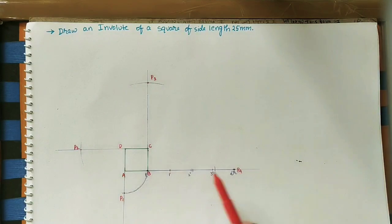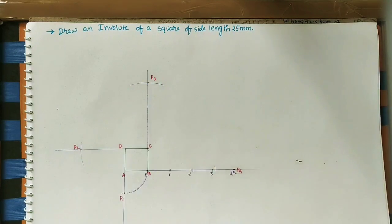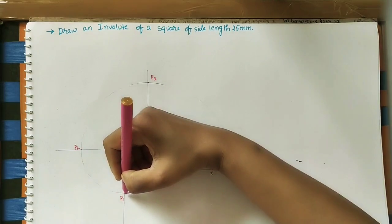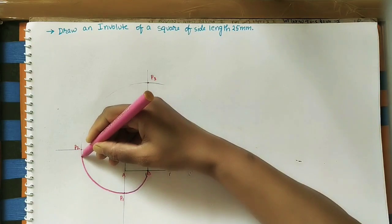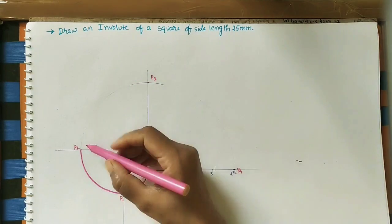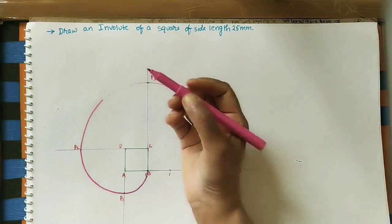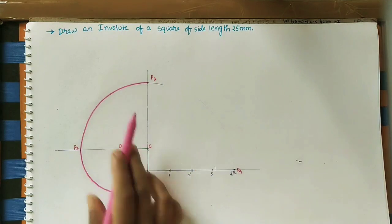Let's draw it with a freehand curve. Join these points. Join P to P1, then P1 to P2, then P2 to P3, and P3 to P4.